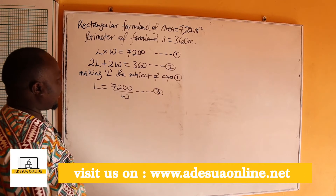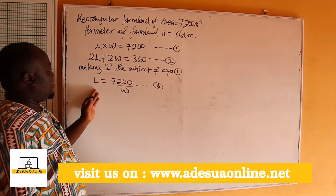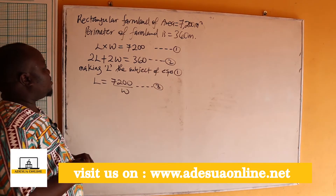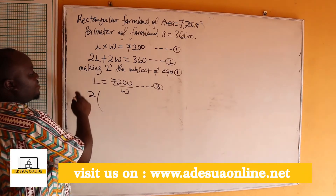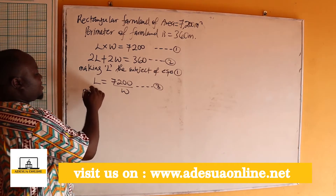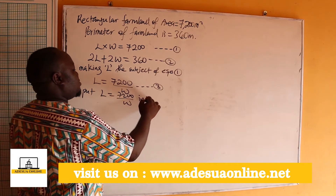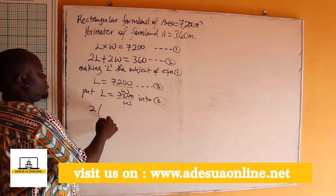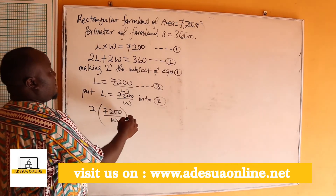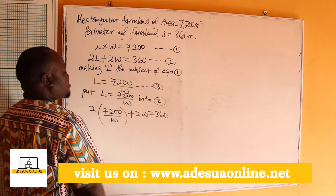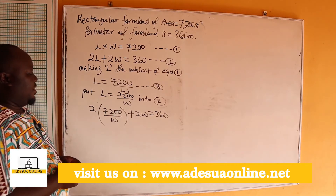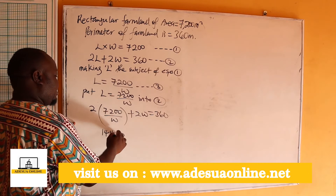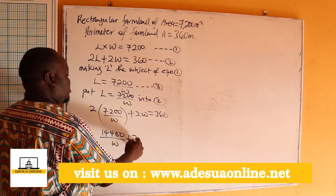Going forward, we are going to replace L in equation 2. Whenever we see L, we put 7,200 over W. So we substitute L equals 7,200 over W into equation 2, giving us 2 times 7,200 over W plus 2W equals 360, which is 14,400 over W plus 2W equals 360.